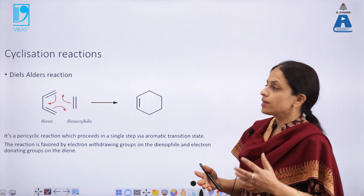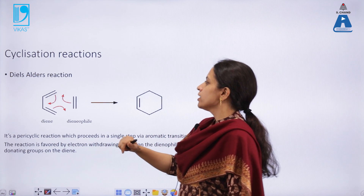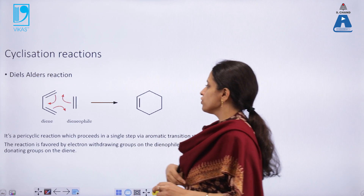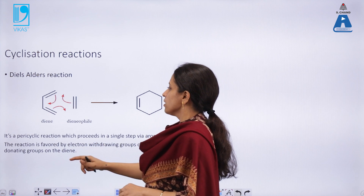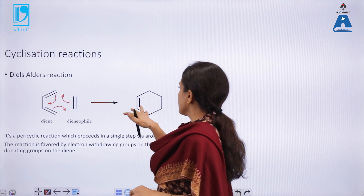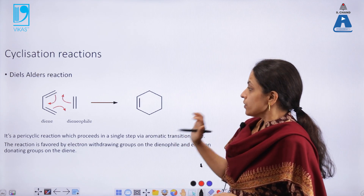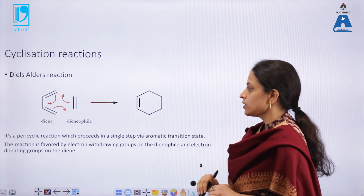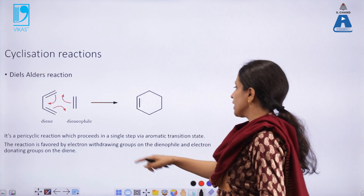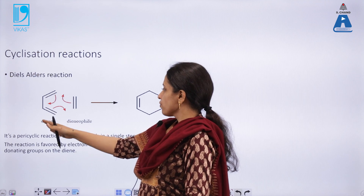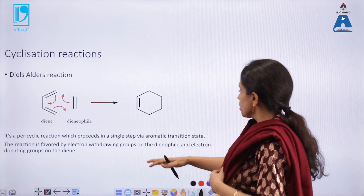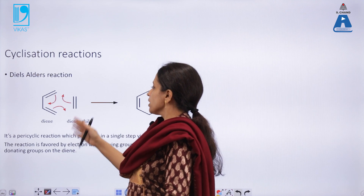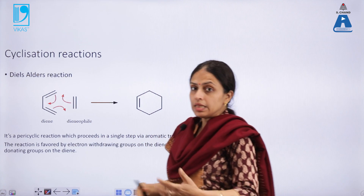Cyclization reactions are mostly pericyclic in nature. The Diels-Alder reaction is a key example: the major reactants are an electron-rich diene and an electron-deficient dienophile. The dienophile reacts with the diene in such a way that a cyclic structure is formed. This reaction proceeds in a single step via an aromatic transition state, producing a cyclic compound.